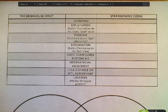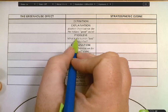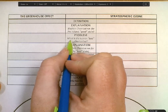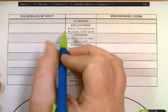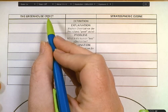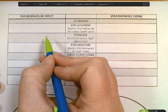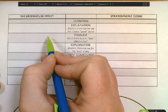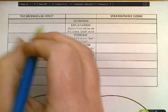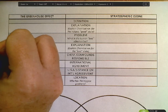I want to start with the problem, because we do have a normal state of affairs for the greenhouse effect, which is a good thing. But the problem is when there's too much, and we call that global climate change.